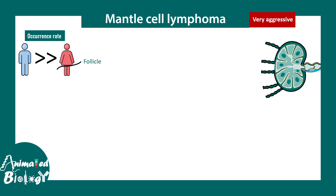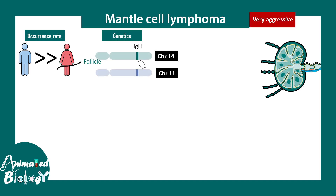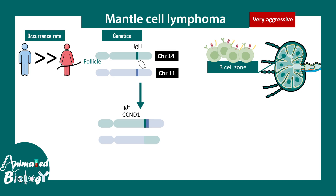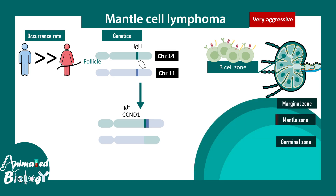Mantle cell lymphoma occurs much more commonly in males compared to females. Again a translocation happens — in this case the cyclin D1 gene, or CCND1, comes into close vicinity of the strong IgH promoter. The IgH promoter influences genes associated with growth, proliferation, and cell division, creating an over-proliferative phenotype. When there is too much cyclin D, cells tend to enter the cell cycle and divide and grow, leading to over-proliferation of B cells specific to the mantle zone — that's how the name comes. The mantle zone is the middle layer in the lymphoid follicle.